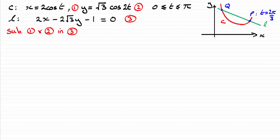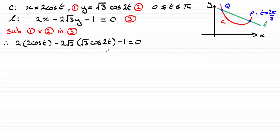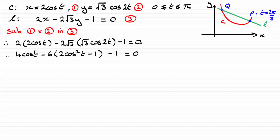Substituting in gives this equation. We've got cos t and cos 2t, so I want to get them into the same trigonometric function. I'll use the double angle identity: cos 2t equals 2 cos squared t minus 1. Putting that in and expanding the brackets: 2 times 2 gives 4 cos t, and minus 2 root 3 times root 3 gives minus 6, replacing cos 2t with 2 cos squared t minus 1.